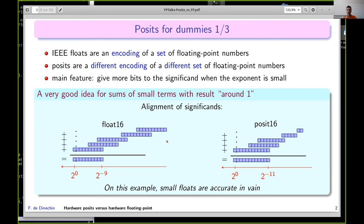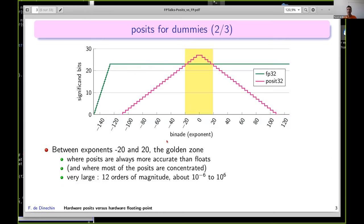To give a wider picture, I take the 32-bit examples. That's the representation of the number of significand bits you have. For floats, the number of bits is fairly constant except when you come close to zero with very small exponents where you have graceful degradation with subnormals. For posits you have a fairly constant degradation, and we have this notion of golden zone where posits are always better than floats.